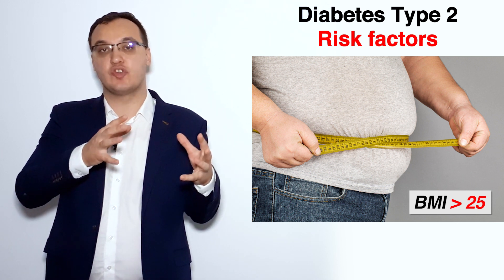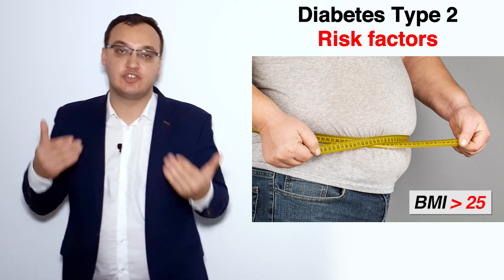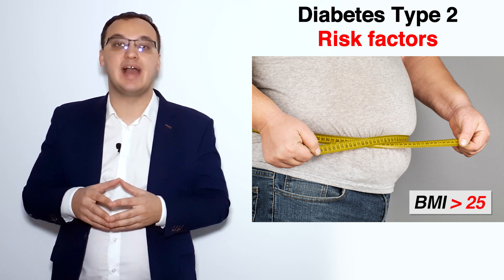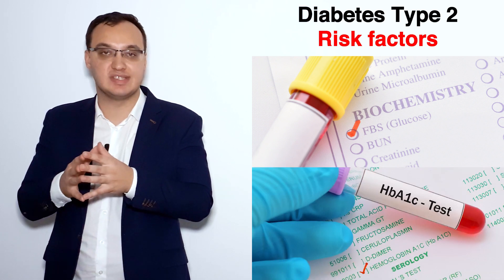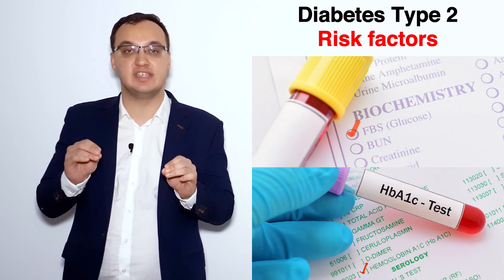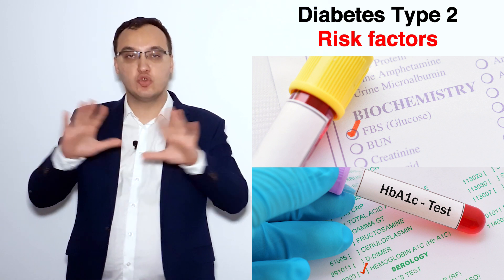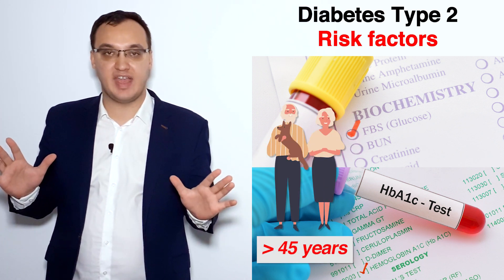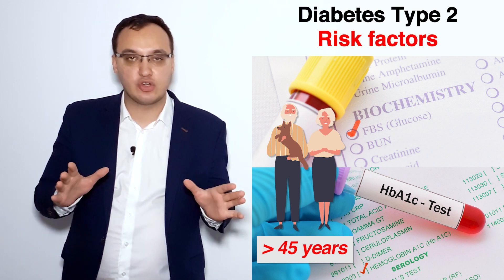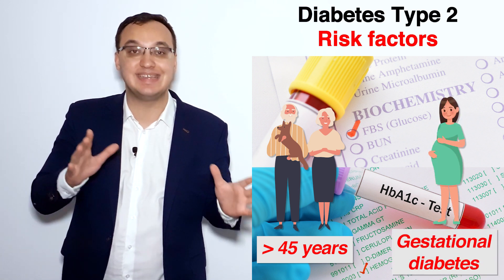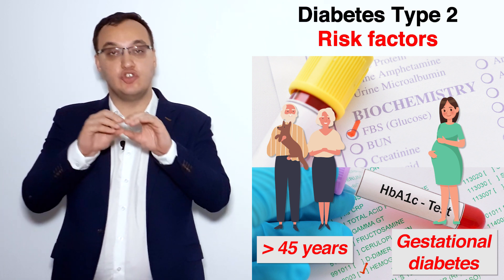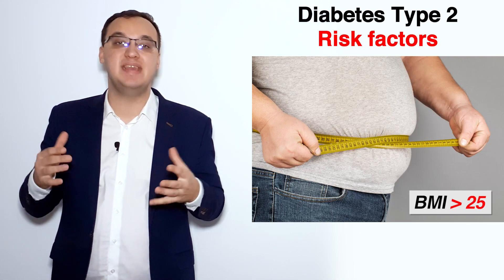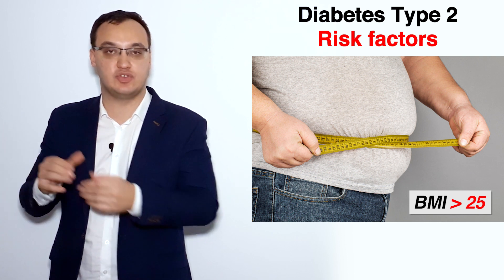Together with these risk factors, there is an indication to actually check the values. Which values are we talking about? We are talking about fasting plasma glucose and hemoglobin A1c. These are the values that need to be checked at the doctor's visit. Usually, most patients that are more than 45 years of age should take these tests. Or if you had gestational diabetes as a woman — meaning you had diabetes during your pregnancy — or if you have a BMI of more than 25.